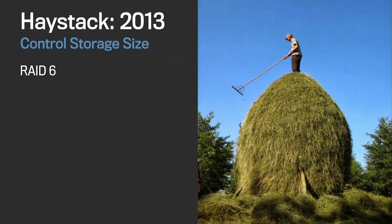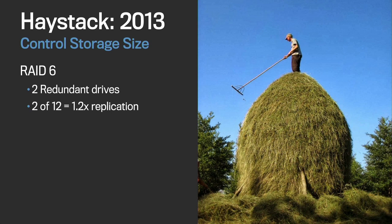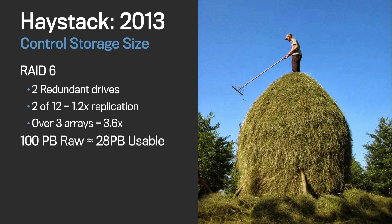Let's talk about the storage size and what all this replication means. We use RAID 6 on the host level, which gives us two redundant drives. On a 12-drive array with two redundant drives, any byte written to the file system takes up about 1.2 physical hard drive bytes of space. If you do this over three hosts, the total space required is 3.6x. To put that in perspective: you buy 100 petabytes of storage, but you're really only getting 28 petabytes of usable space.